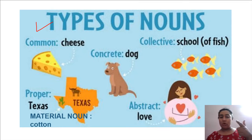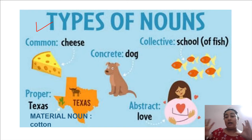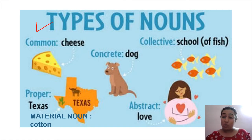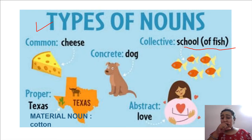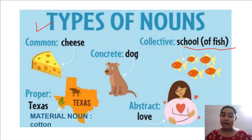We can see Texas, we can see that the girl is feeling love the way she's embracing her heart, and we can see one, two, three, four, five — that is a group of fish, but actually we call them a school of fish. So these are the types of nouns. Now you must be thinking: why are only these types of things called nouns? I've got you all covered.